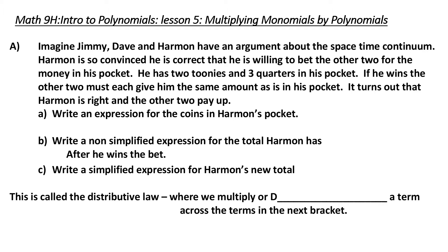Write an expression for the value of the coins in Harmon's pocket. First of all, we'd have to identify or use variables to represent what we're talking about. What are our two values? They are toonies and quarters. So, we're going to let the value of toonies equal t and the value of quarters equal q. Now, a toonie is worth $2 and a quarter is worth $0.25. Write an expression for the coins in Harmon's pocket.